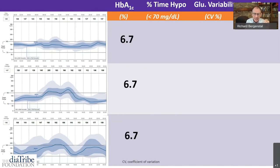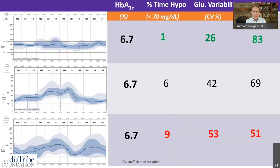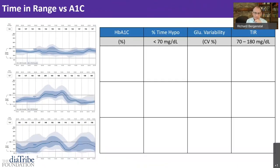Each one of them got a lab blood test of 6.7%, but remember hypoglycemia under 70 — the bottom patient had nine times as much hypoglycemia as the top one with the same A1C. And glucose variability — how much they swing up and down — there was twice as much variability: 53 was the number versus 26 for the top. I said I'd like it to be under 36. And the time in range: the bottom one had a time in range of only 50, versus 83 for the top. So A1C does not tell you the whole story. We really want to look at time in range and how much hypoglycemia there is — it will mean a lot more to you in your day-to-day life.